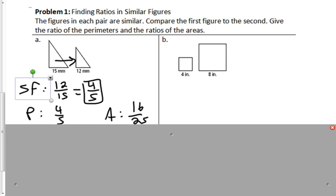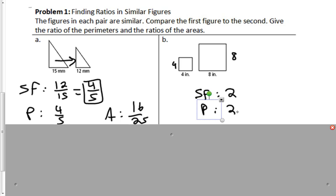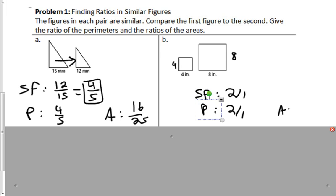For figure B, they're squares — one is 4 by 4 and the other is 8 by 8, so it's twice the size. The scale factor is 2 to 1. The perimeter ratio would also be 2 to 1. But the area ratio, you'd have to square it — it'd be 4 to 1. We can check: 4 by 4 is 16 and 8 by 8 is 64, and 64 is exactly 4 times bigger.